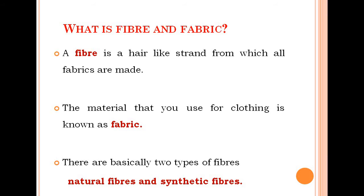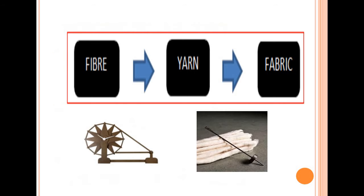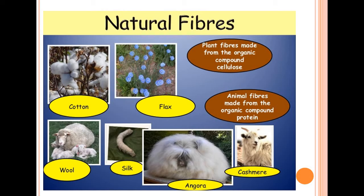Examples of synthetic fibers include rayon, nylon, polyester, etc. Now, fiber is the small strand. When fibers are twisted together, they increase in thickness and length to form yarn. When yarns are twisted together, they form fabric.